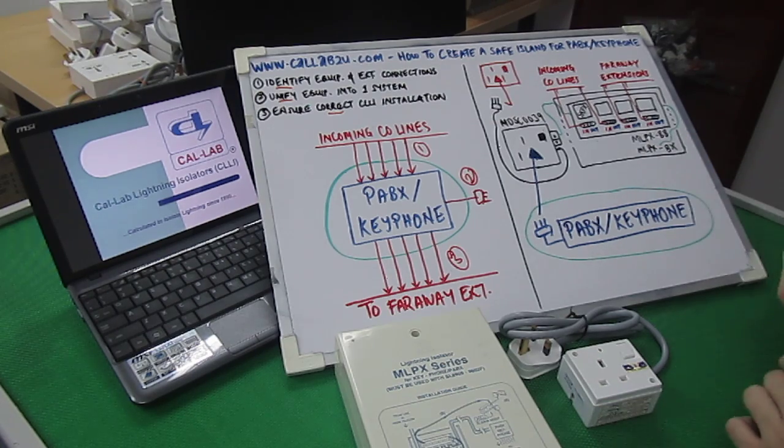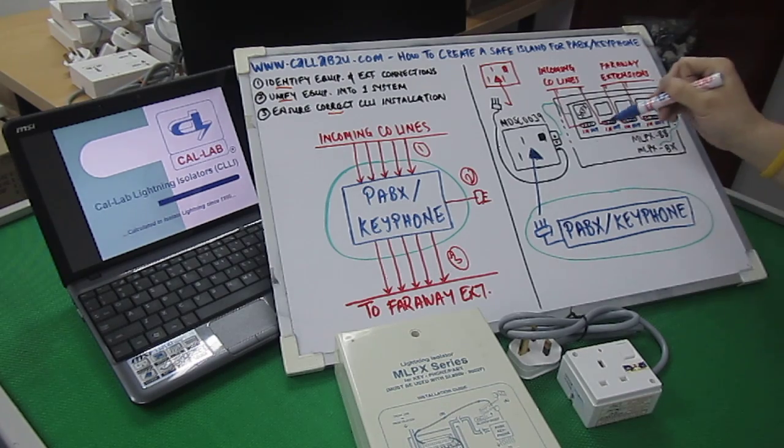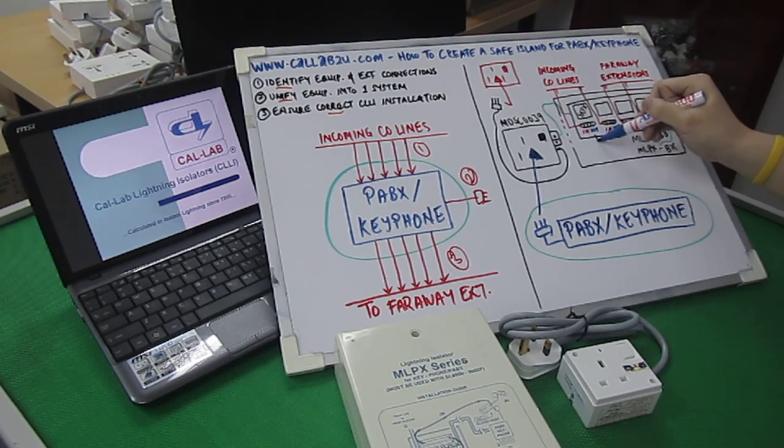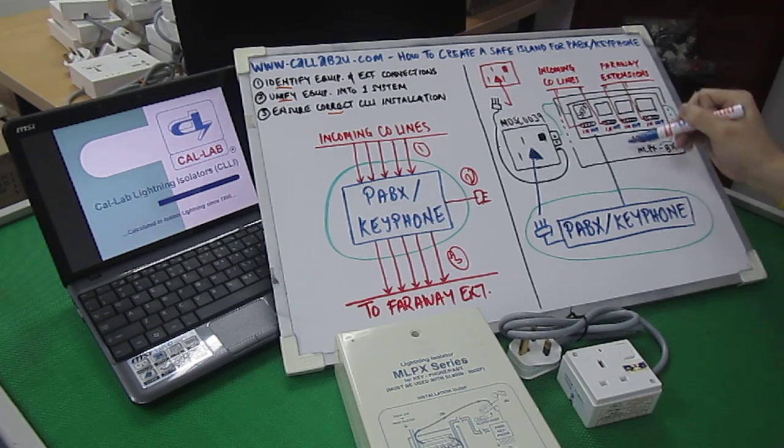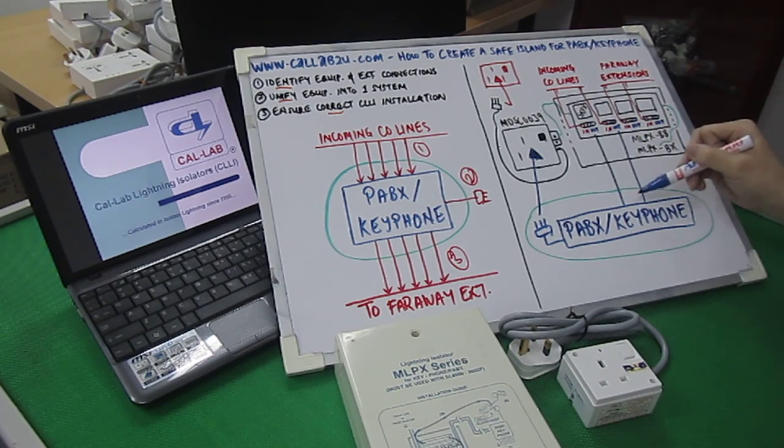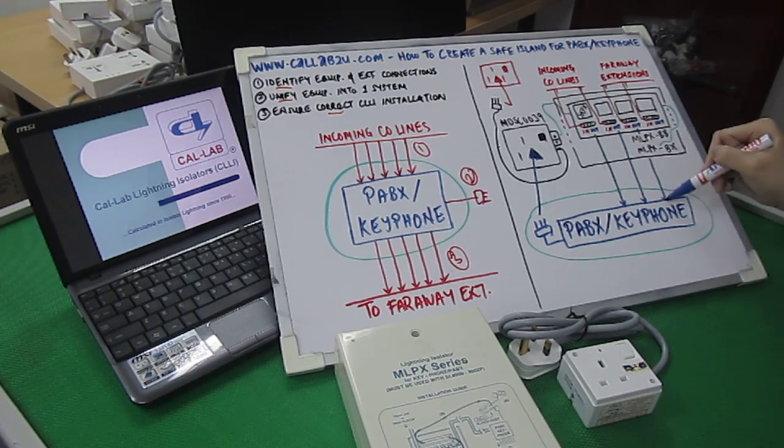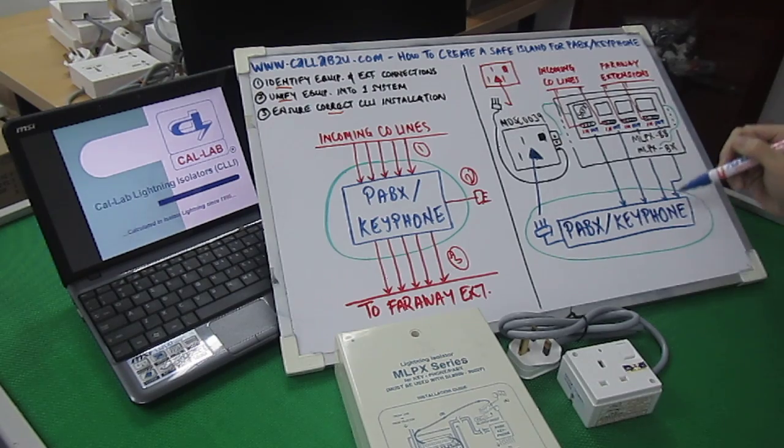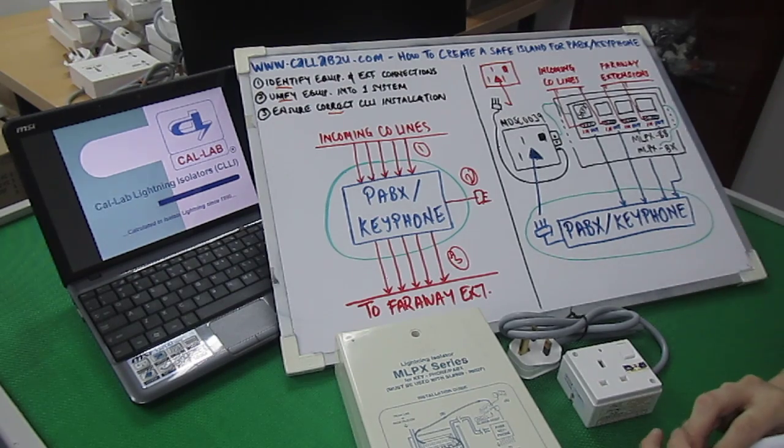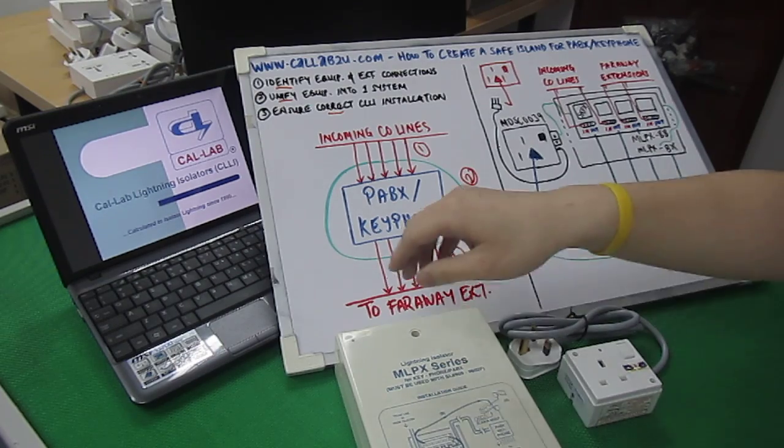And then, from the MLPX baseboard itself, the out will be then connected to your PABX. So, the out connected to your PABX or key phone, like such. So, this is step number three: correct CLLI or CalLab Lightning Isolator installation. Now, let's take a look at it in its physical form.